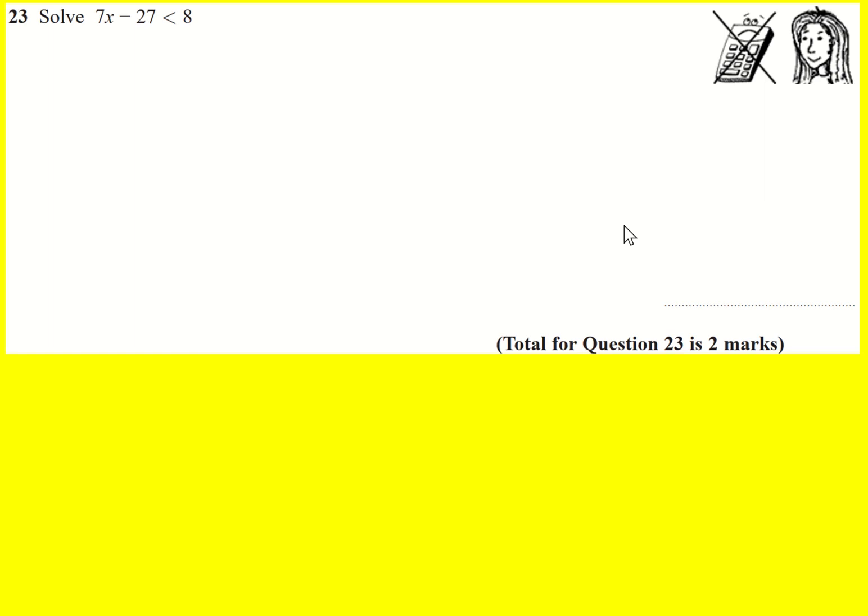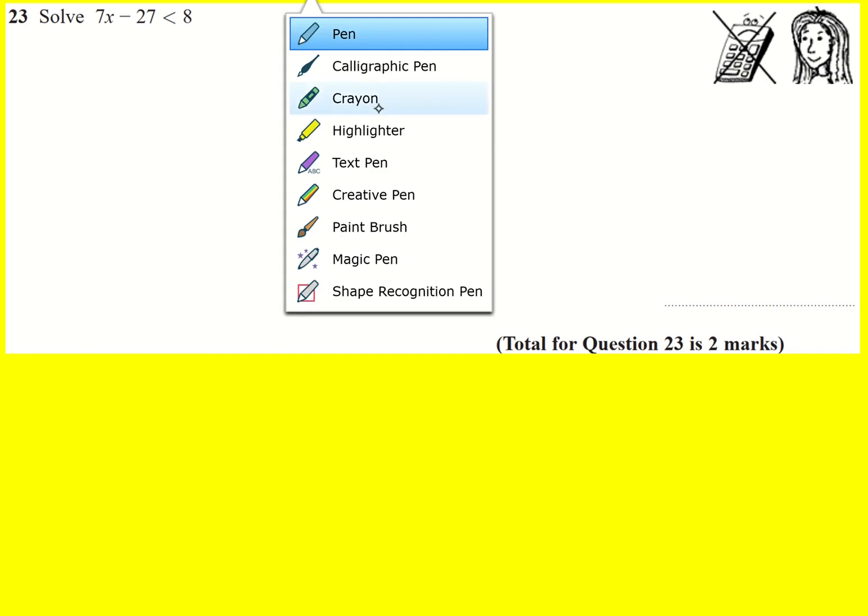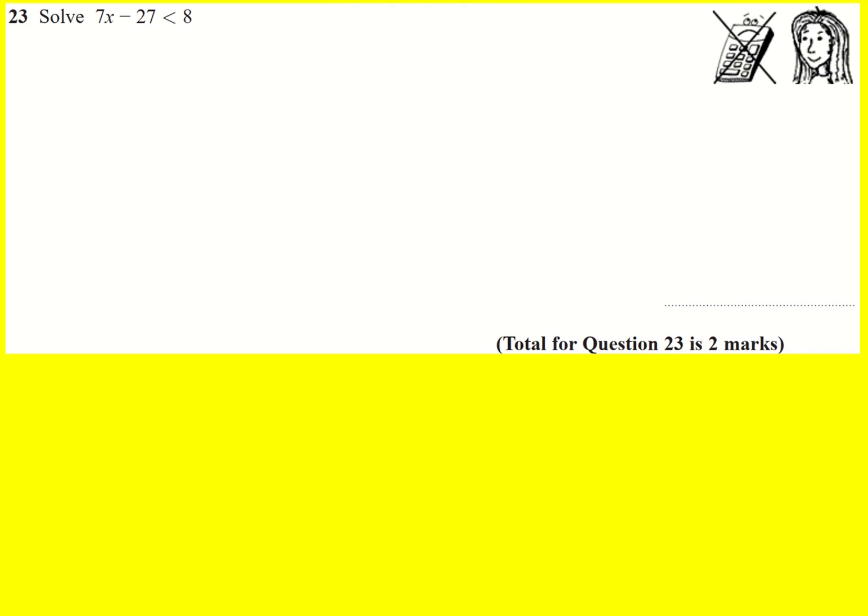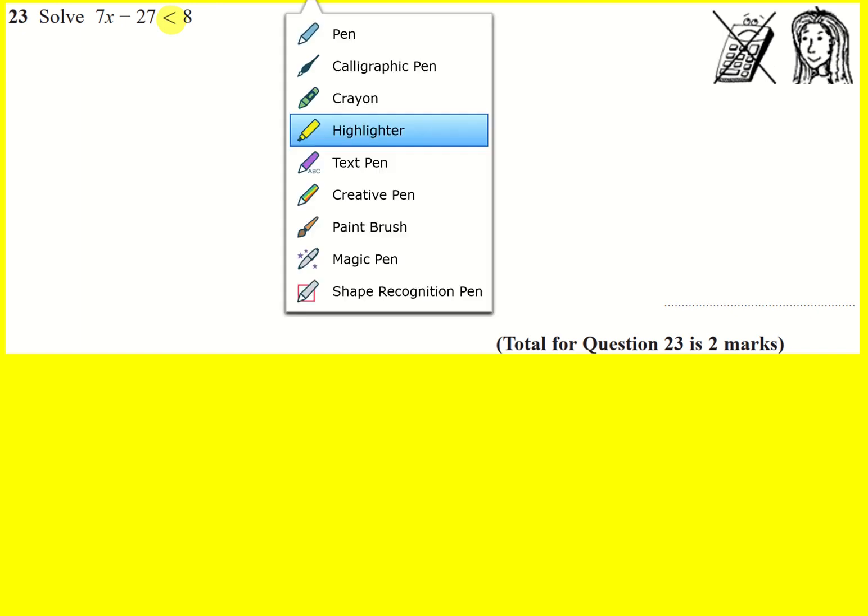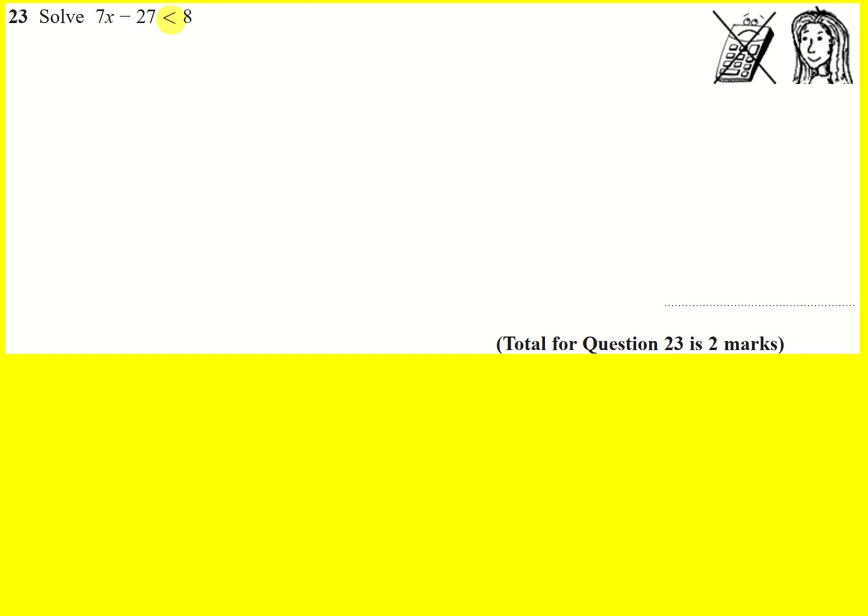Solve 7x minus 27 is less than 8. This is an inequality because it has the less than symbol in this situation, but don't let that put you off.